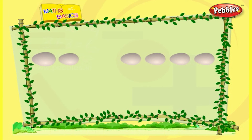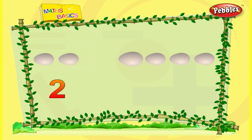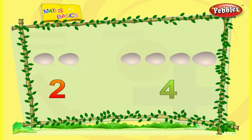One, two — there are two eggs. One, two, three, four — there are four eggs. Two is lesser when compared to four.